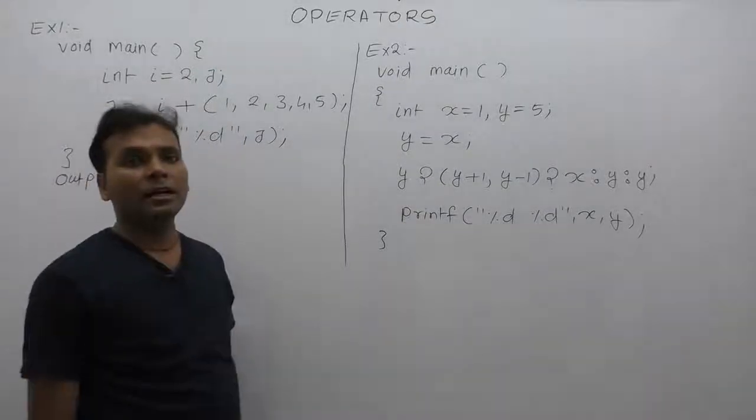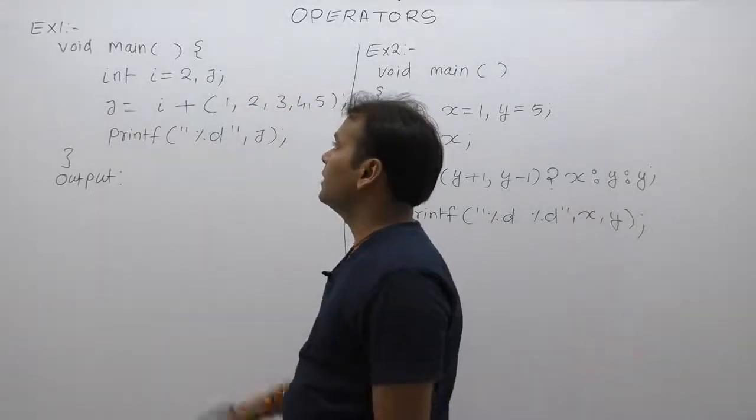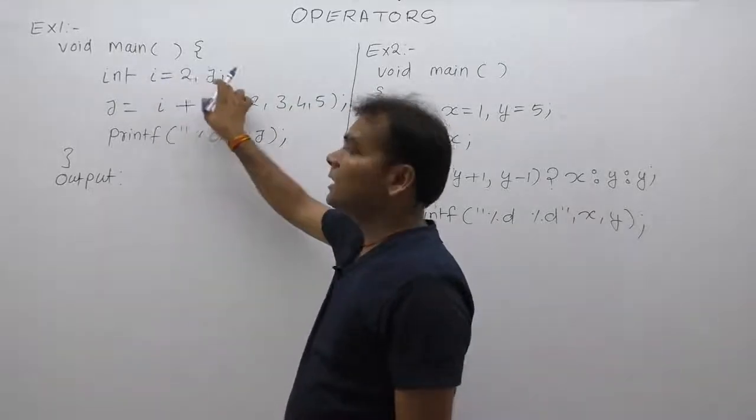Let's see that example regarding comma operators. First one, Example 1, here we are declaring two variables i and j.